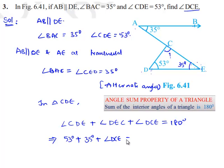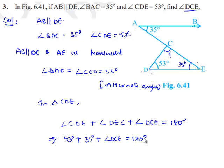This implies 53 degrees plus 35 degrees, which is 88 degrees, plus angle DCE equals 180 degrees.